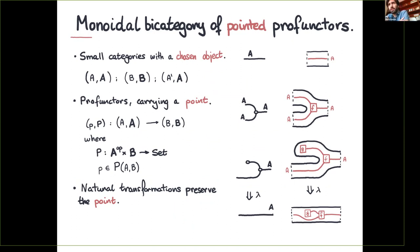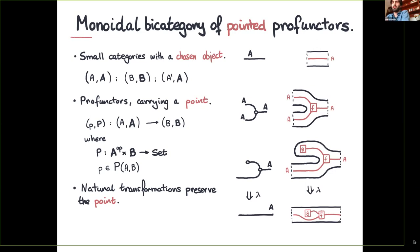Instead of just taking small categories, we take small categories with a chosen object — drawn in black for the profunctor and in red for the chosen object wire. Now profunctors need to carry a point: each time we have a profunctor, it not only goes from small categories with a chosen object but we need to evaluate the profunctor at those chosen objects and pick a point inside it. Natural transformations must preserve the point — if a deformation acts on the diagram, the points must go along as expected.